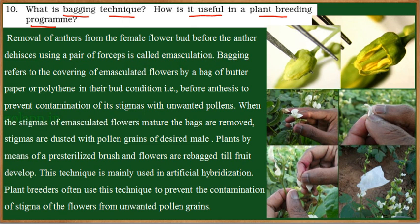Due to various pollinating agents during hybridization, there are more chances for pollens to transfer and cause unwanted pollination. If this occurs, we will not get the desired hybrid plant that the farmer or plant breeder has selected. In order to get rid of pollination from unwanted pollen grains, the bagging technique is used.